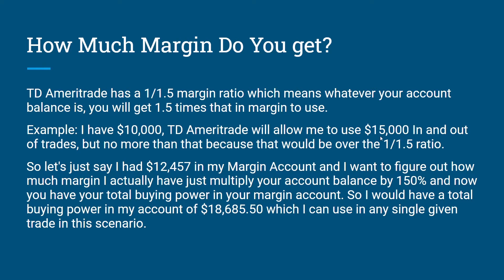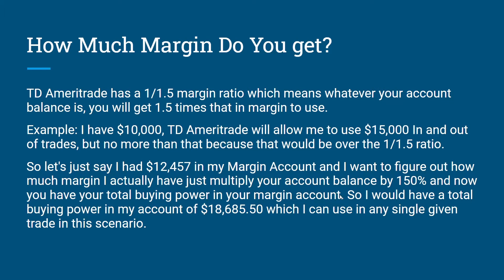If the number isn't a round figure — let's say I had $12,457 in my margin account and I want to figure out how much margin I actually have — what you do is multiply your balance by 150%, and that gives you your total buying power. In this case, I would actually have $18,685.50 to use in any trade I want.